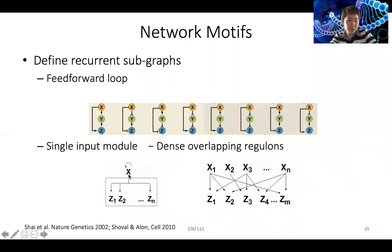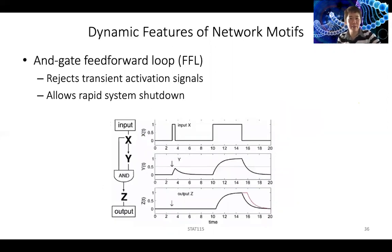There are some single input modules. For example, this one transcription factor can regulate many other genes. But there are also, I think for E. coli you probably see more of the left, but in human you see a lot of situations like the right. It's many transcription factors working together to regulate many other genes. That's why humans didn't have too many more genes than C. elegans or fly, but our regulation can be much more complicated. Through this multiple transcription factor regulating multiple genes, we can create much more complex regulation patterns.